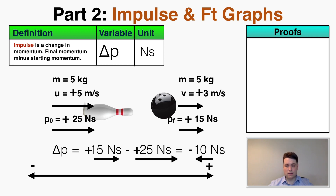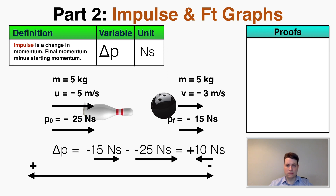Impulse, just like everything else with momentum, depends on which direction we consider positive and negative. If I switch so that left is positive and right is negative, both velocities become negative, meaning both momenta are negative. The ball goes from negative 25 to negative 15, so the impulse is now positive 10, because negative 15 minus negative 25 is positive 10. So the sign of impulse — whether positive or negative — depends on the chosen direction convention. Impulse also has a direction.